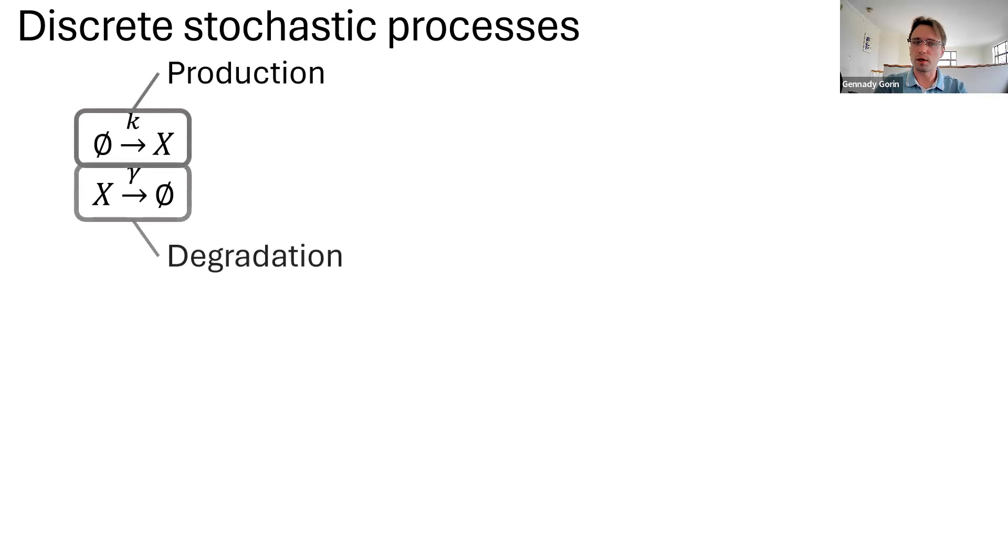To fix this, we have to account for single molecule reactions. And this turns out to be relatively straightforward. First, we write down which reactions can happen. Well, still production degradation. Then we conceptualize the system as moving between states with zero, one, two, three, et cetera, molecules of RNA. We endow those transitions between states with the correct rates.